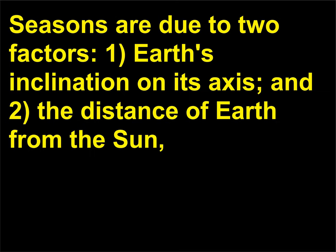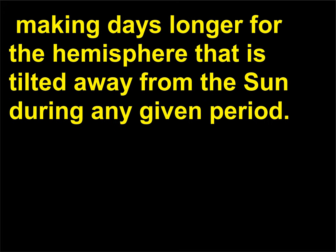Why do we have seasons? Seasons are due to two factors: one, Earth's inclination on its axis, and two, the distance of Earth from the sun. This makes days longer for the hemisphere that is tilted toward the sun during any given period.